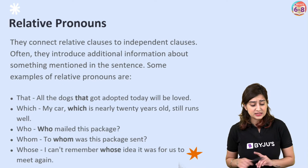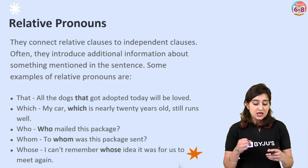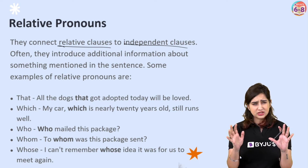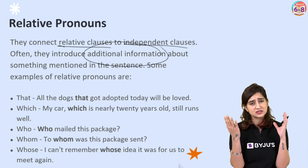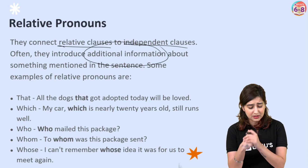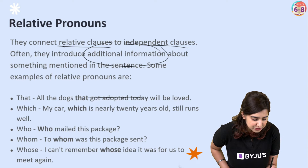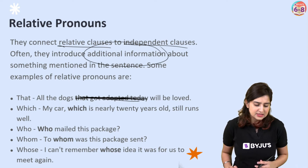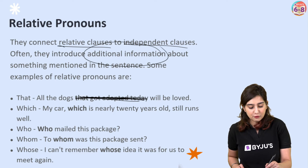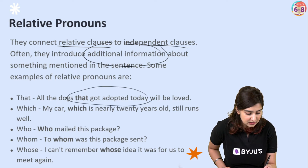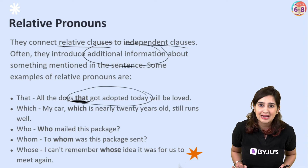Now let's move on to relative pronouns. Personal pronouns were easy. Relative pronouns are a bit more complicated. Yeh relative clauses ko independent clauses se connect karte hain — bas itna yaad rakho ki jab aap additional information dete ho kisi sentence mein, jab woh extra information kisi noun ke baare mein deni hai, toh aap relative pronoun use kar sakte ho. For example: 'All the dogs that got adopted today will be loved.' If you remove 'that got adopted today', the sentence still makes sense — 'All the dogs will be loved' — but the relative pronoun 'that' adds specific additional information.